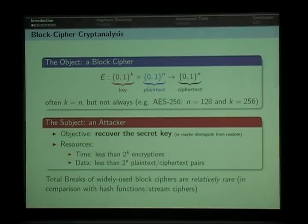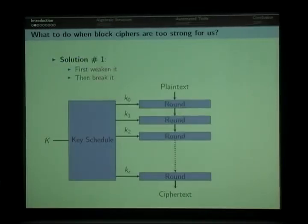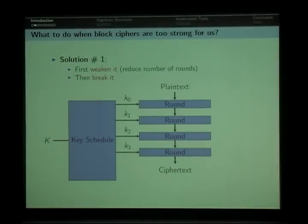These days breaks of widely deployed block ciphers are relatively rare, at least in comparison with what happens in the hash function or stream cipher world. So if we cannot break these full things, what can we do? We could weaken them before trying to break them. The usual approach to weaken a block cipher is to reduce its number of rounds, because most block ciphers are iterated constructions where a round function is iterated on the plaintext using subkeys generated by a key schedule algorithm. So a natural option is to reduce the number of rounds. The objective of the attacker then becomes to break as many rounds as possible under the limits of exhaustive search and the full codebook.